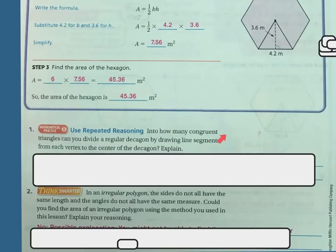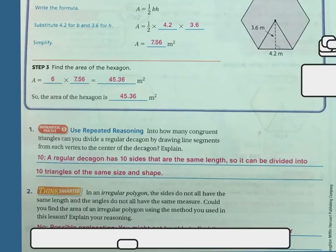Into how many congruent triangles can you divide a regular decagon by drawing the line segments from each vertex to the center of the decagon? Explain. Well, it's going to be 10 because a regular decagon has 10 sides of the same length, so it can be divided into 10 triangles of the same size and shape.